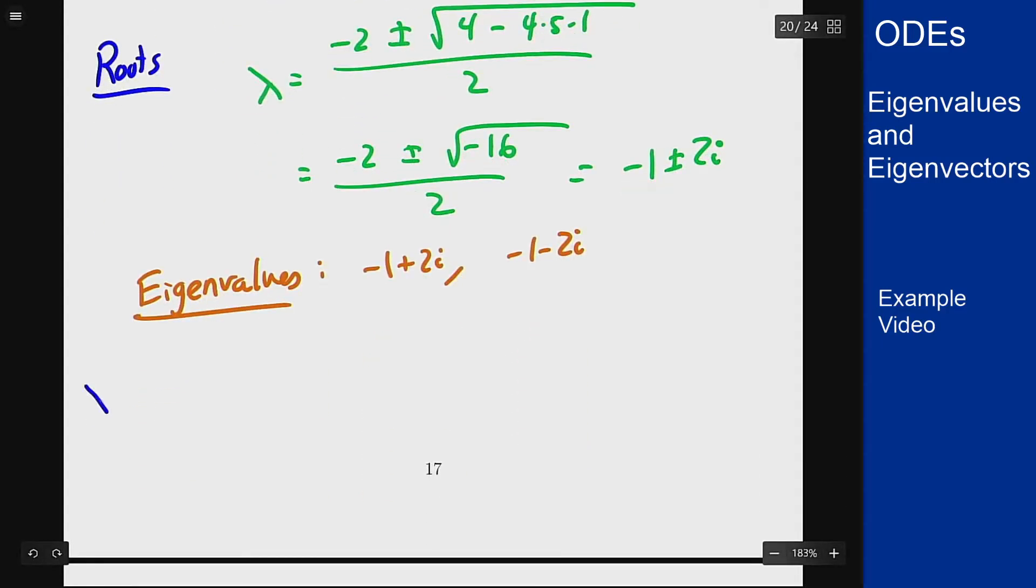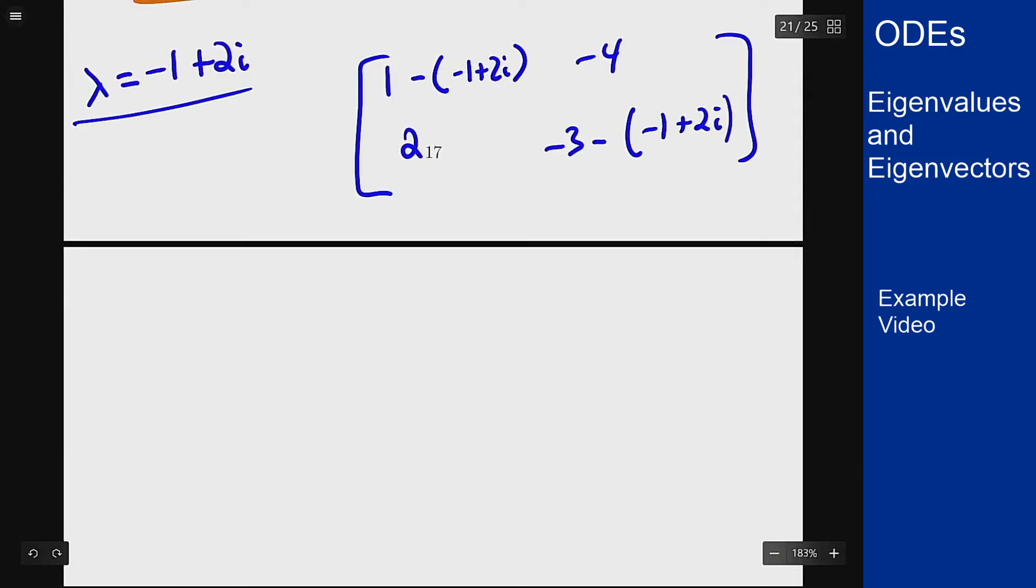Let's look at lambda equals negative 1 plus 2i. You can pick either one here; we're going to pick this one. So if I do A minus lambda I for this value, we're going to get 1 minus negative 1 plus 2i minus 4, 2, negative 3 minus negative 1 plus 2i. Now I want to simplify these expressions. So in the top we're going to get 2 minus 2i, minus 4, a 2, and then negative 2 minus 2i.